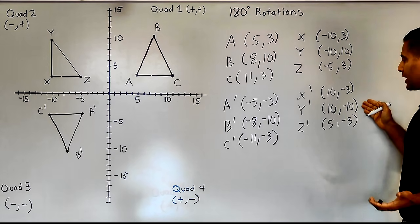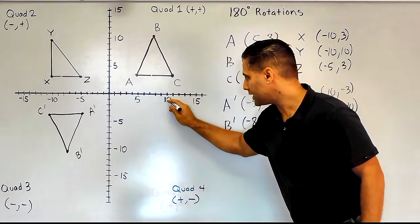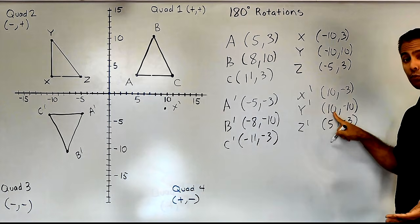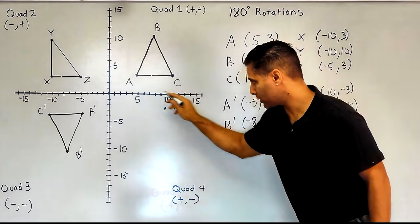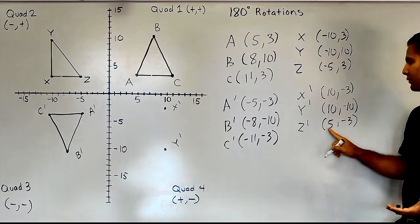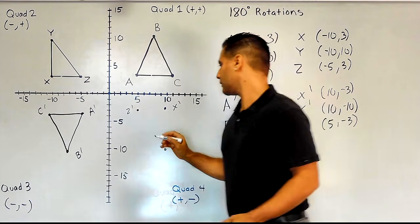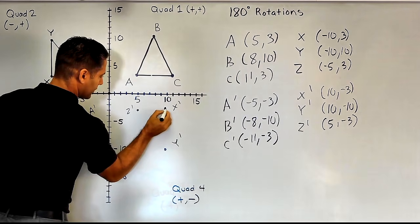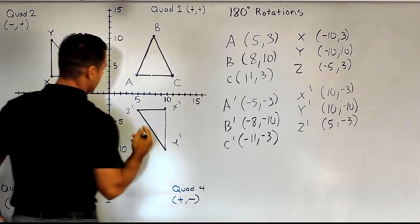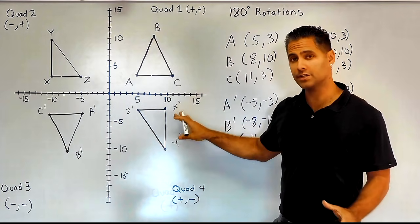Now that we have our new locations, let's plot them. For point X, we go to positive 10, negative 3. Point Y is to the right 10 and down 10, so we go to positive 10 and down 10. And for Z, we go to the right 5 and down 3. Now let's connect our points. This is the original location of XYZ, and this is the 180 degree rotation about the origin.